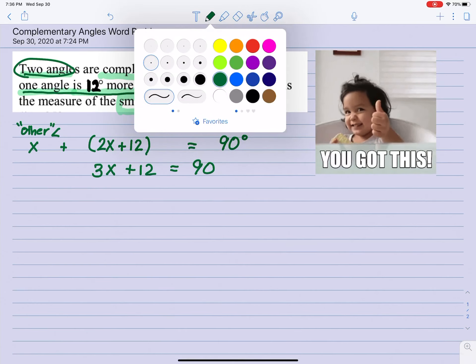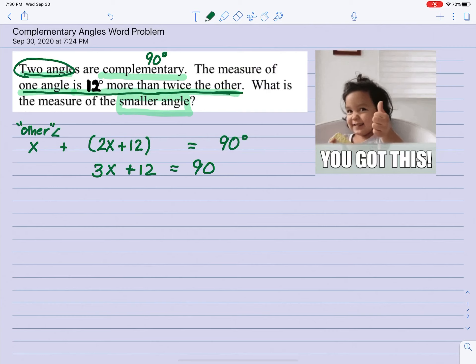We want to solve for x, so the opposite of plus 12 is minus 12. What you do on the left, you do to the right. And so we have 3x equals 90 minus 12, which is 78.